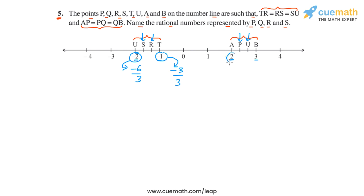Similarly, we can write 2 as 6 by 3, and we can write 3 as 9 by 3. So we have written these integers as equivalent rational numbers with denominator 3.